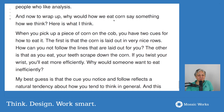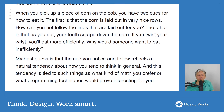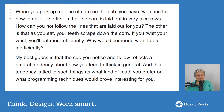Why would how we eat corn say something about how we think? When you pick up corn on the cob, you have two cues: the corn is laid out in very nice rows — how can you not follow the lines? The other cue is that if you twist your wrist as you eat, you'll eat more efficiently in a spiral. The best guess is that the cue you notice and follow reflects a natural tendency in how you think, tied to what kind of math you prefer or what programming techniques interest you.